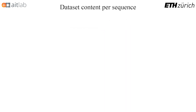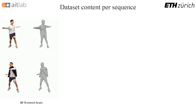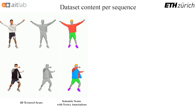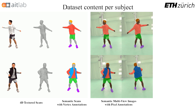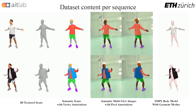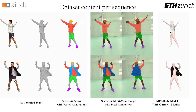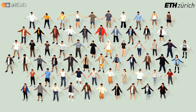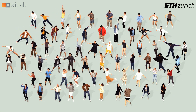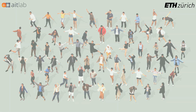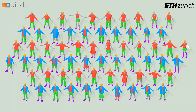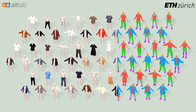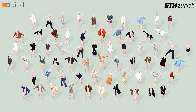For each sequence in the 4D Dress dataset, we provide high-quality 4D textured scans of inner and outer human outfits, precise vertex-level semantic annotations, images captured in the multi-view system with corresponding pixel labels, and registered parametric bodies wearing the extracted garment meshes. 32 subjects are part of 4D Dress, each with two different outfits. A sequence consists of 150 frames, for a total of 78,000 frames in the dataset. We defined six semantic classes: human skin, hair, shoes, upper clothes, lower clothes, and outer clothes. In particular, half of our data contains high dynamic motions with loose garments.